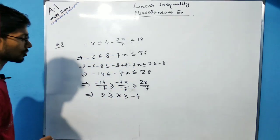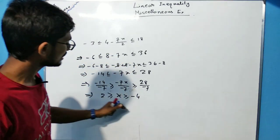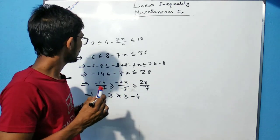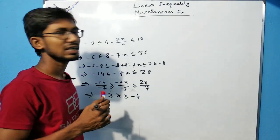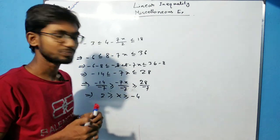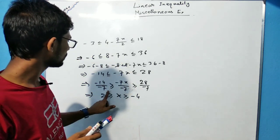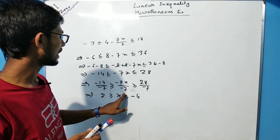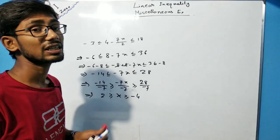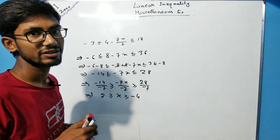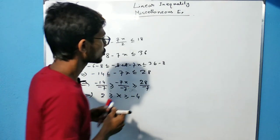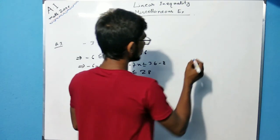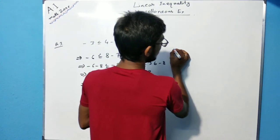So this is the solution of the given linear inequality. Now we have to represent this solution on a graph — that means on a number line. If we draw the number line, then we will get this.